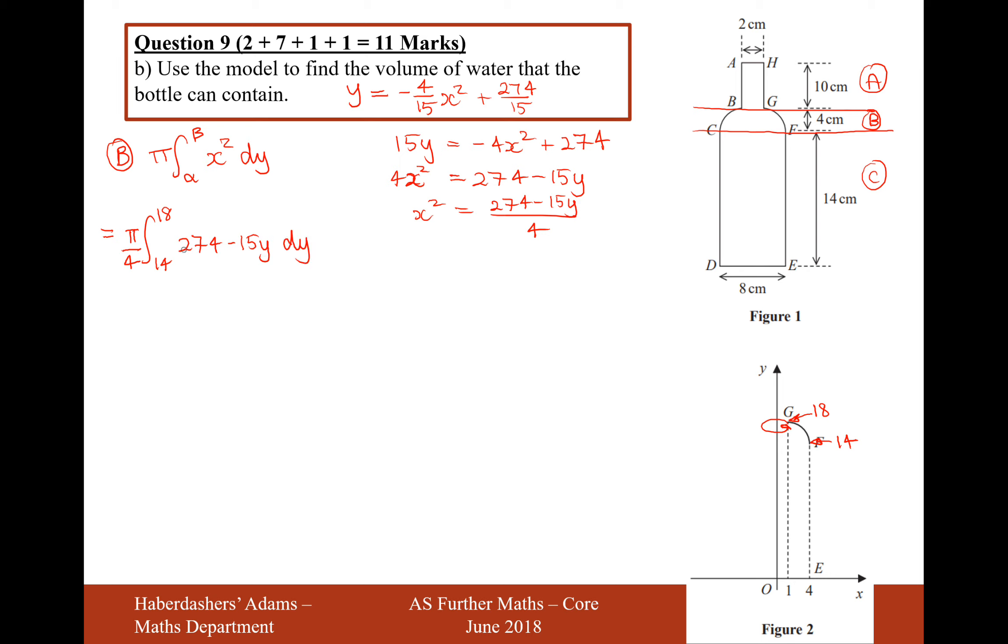So there we are, we've substituted x squared in, we've factorised the 4 to the front, and then it's 274 minus 15y. Let's now go ahead and do the integral on all of this. So it's now going to be 274y minus 15y squared over 2. And then we'll substitute in the boundaries of 18 and 14. And then when you substitute in all those boundaries and then divide through by 4, you're going to get an answer of 34 pi.